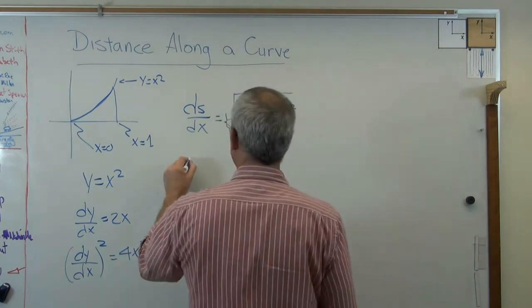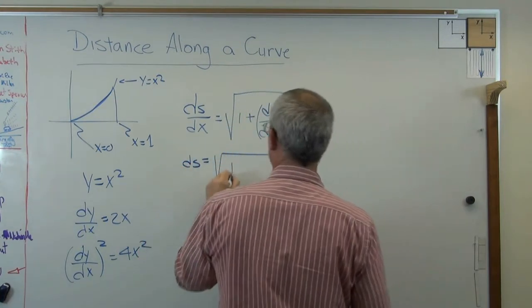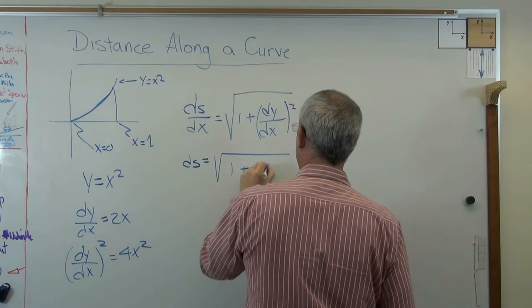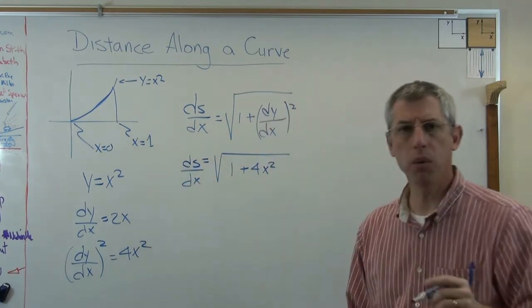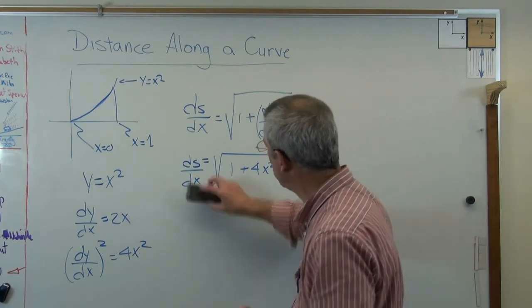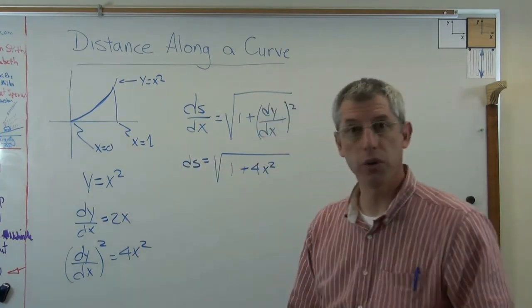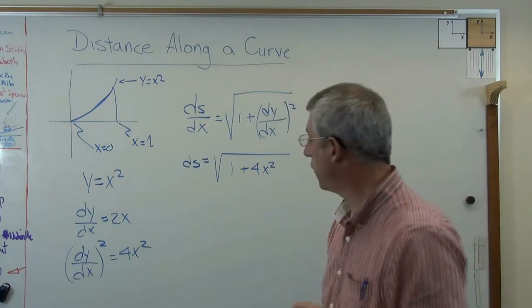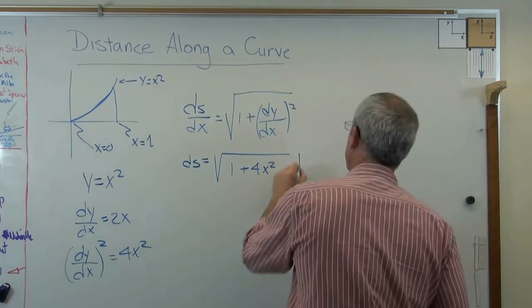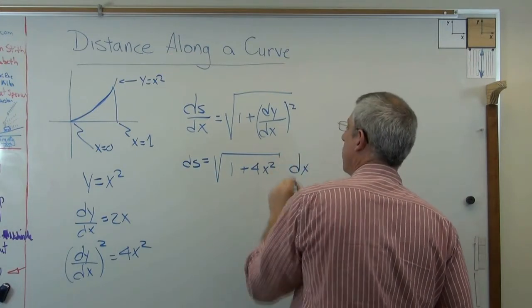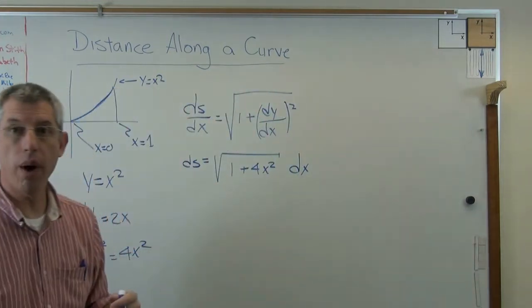So let's just plug that in here and say ds equals 1 plus 4x squared, ds over dx there. I'm going to make one more change. Then I'm going to multiply through by dx. Remember, it's just a variable. We can treat it like a variable. It's a variable that has some very specific properties, but it's a variable. So I'm going to put that dx right there. Now,